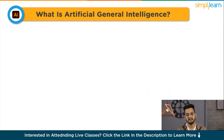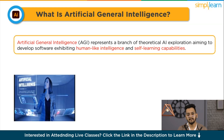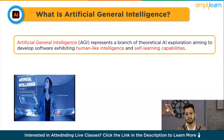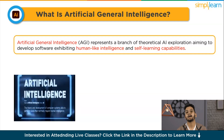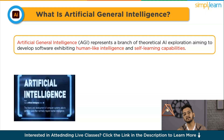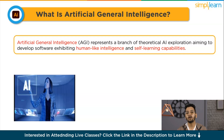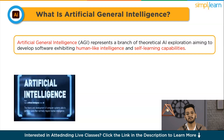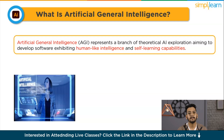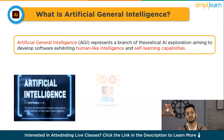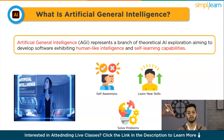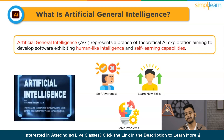What is Artificial General Intelligence? AGI represents a branch of theoretical AI exploration aiming to develop software exhibiting human-like intelligence and self-learning capabilities. The goal is to enable the software to undertake tasks beyond its specific training or initial development. Existing AI operates within fixed limits — for instance, AI built for image tasks can't create websites. AGI seeks to create autonomous AI with self-awareness, the ability to learn new skills, and solve problems.